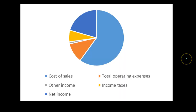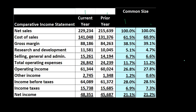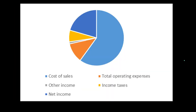We can also graph this — consider it as a pie chart to give a visual. Here are basically our expenses: the largest being cost of goods sold, then break out the rest of the expenses from there. This is a nice way to give a visual of what we're expending in relation to gross sales.